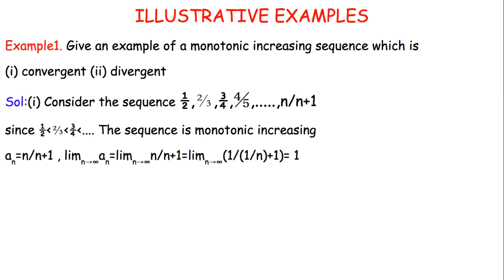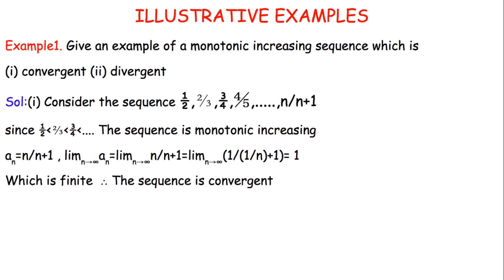As N approaches infinity, we compute the limit of AN by dividing numerator and denominator by N, giving 1 upon (1 + 1/N). As N approaches infinity, the denominator becomes 1 upon (0 + 1), so the numerator is 1 and denominator is 1. Therefore the limit equals 1, which is finite — so it is a convergent sequence.